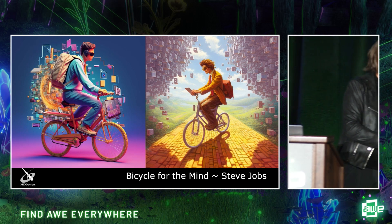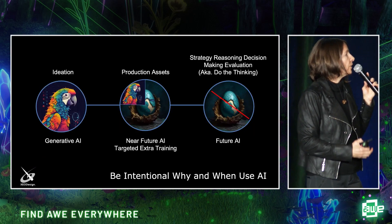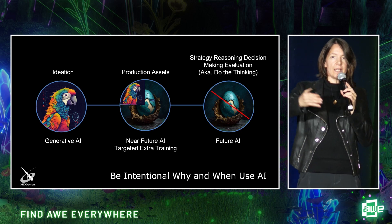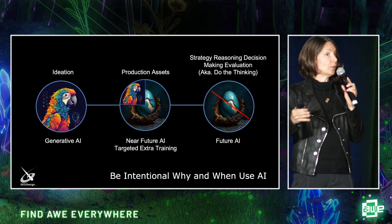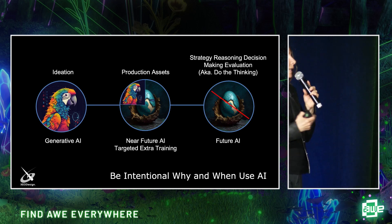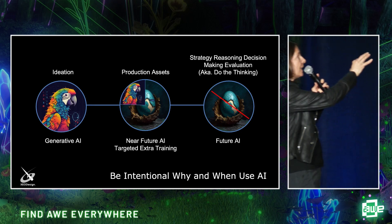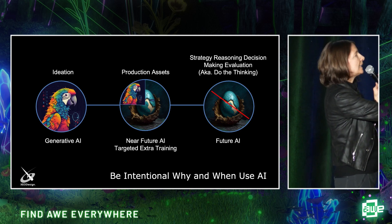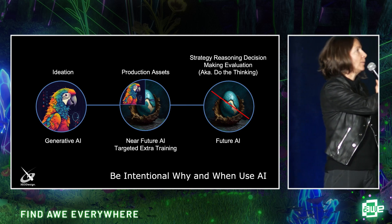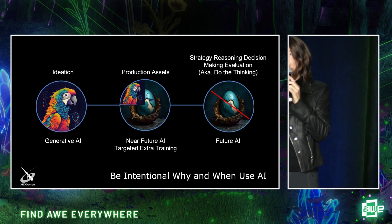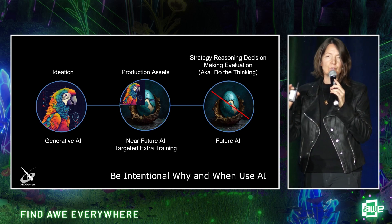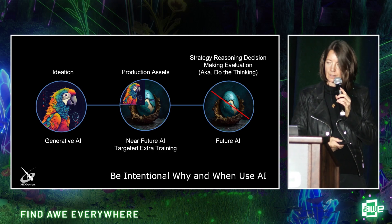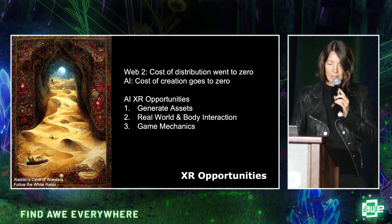In making a product like a game, we want to look at why we're using AI and when in the production process. The usefulness of AI we've found so far is very different depending on the stage and the application. For ideation it works well; for production assets it depends — some works, some doesn't. For strategic reasoning, actual design and game balancing — that's future AI; it's really not here yet. You want to be intentional.